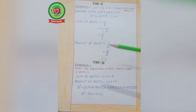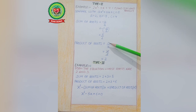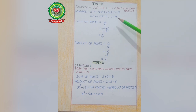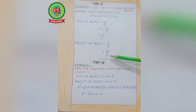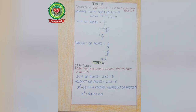Now the second one — Product of Roots. The formula is c/a. Fill in the values: c is 4 and a is 2. After simplifying, the answer is 2. So this is Type 1: when the equation is given and we have to find the Sum and Product of Roots.